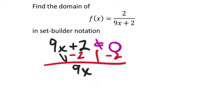I'm dropping 9x here. It cannot equal negative 2. Then divide both sides by 9. That's a 9. There we go.